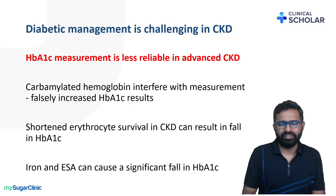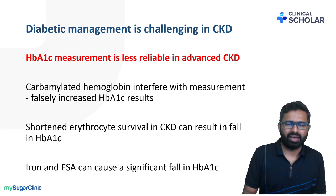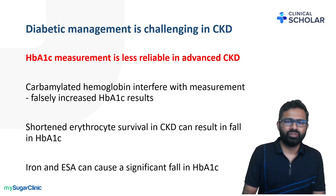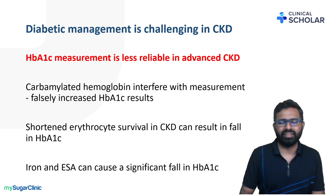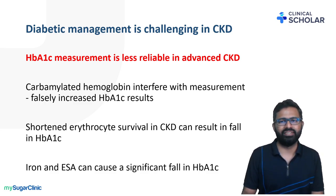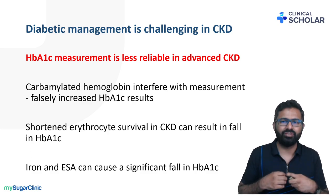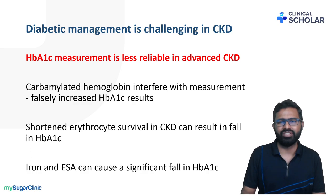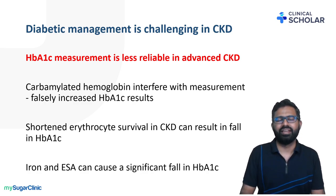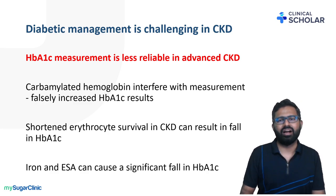In patients with CKD, the lifespan of RBCs is less — normal lifespan is 120 days, but it is now less. That means there will not be enough glycosylated hemoglobin in the blood, so HbA1c value can falsely come down even if blood sugar values are high. Many patients with advanced CKD are on iron and erythropoietin. These agents stimulate production of RBCs and result in release of more new RBCs into the circulation which are not glycosylated, resulting in falsely low HbA1c even if blood sugar values are high.